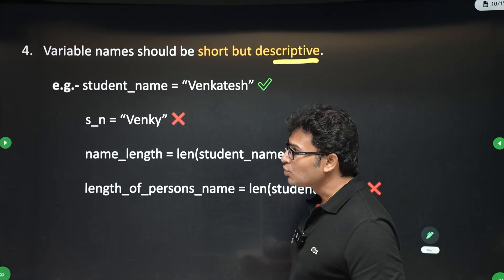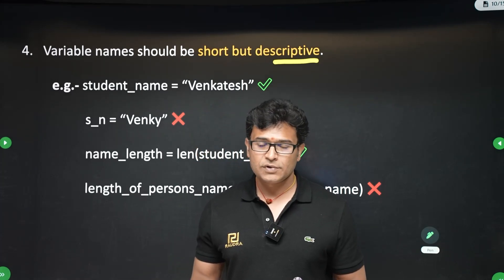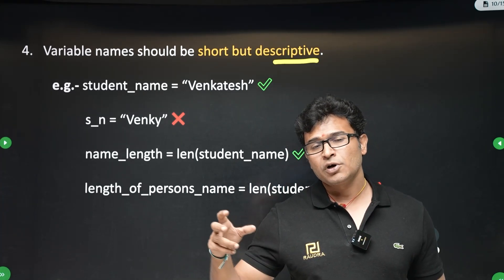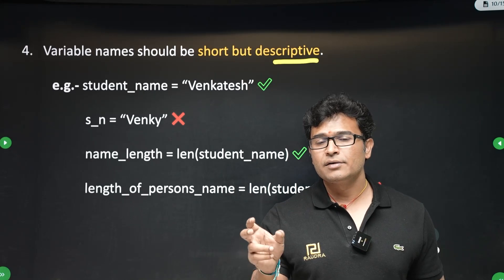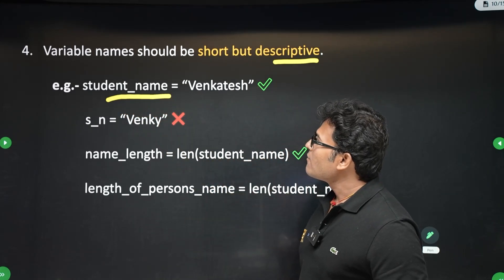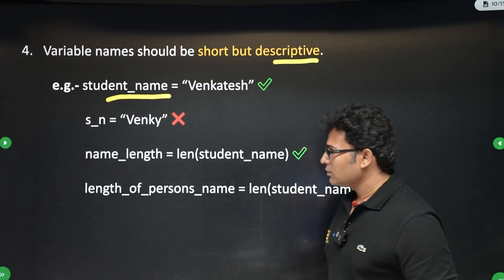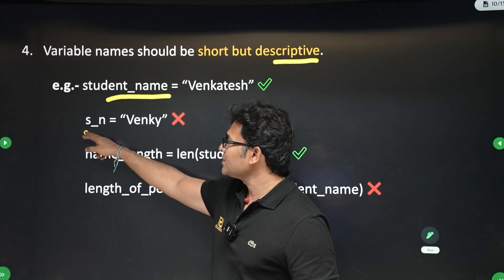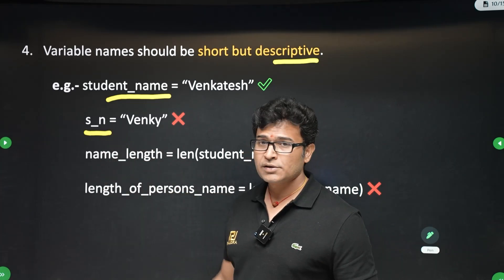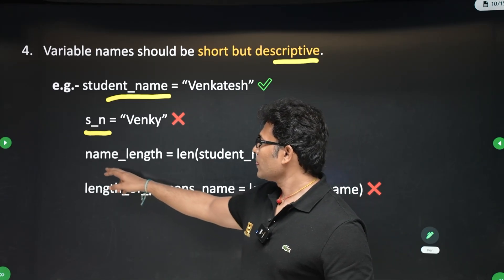And variable should be short, but descriptive. See, this is not a rule, this is a convention. What is the convention? Convention means all the programmers generally follow them. It is not a rule that you have to follow it. Whenever you are writing the variable names, the name should not be too short, the name should not be too long. It should be descriptive and short. For example, student_name is a very good variable name because it is giving you the meaning of what it is.